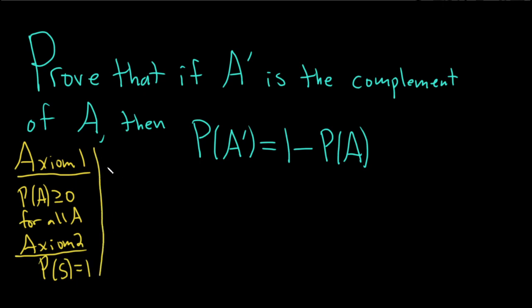And then lastly, we have axiom 3, which says that if you have mutually exclusive events, say A1, A2, and so on, and you take the union of these mutually exclusive events, you get the sum of the probabilities of these mutually exclusive events.